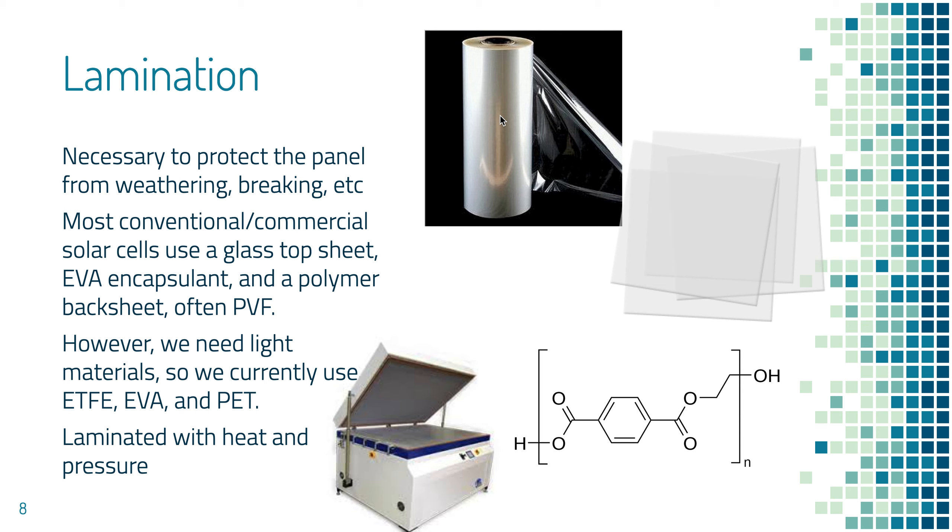ETFE is our top sheet. Our top sheet is very thin and it has a very good refractive index, so not a lot of light is absorbed by it. Then EVA, same encapsulant as other solar panels. It's just like glue. And then our back sheet, slightly thicker than our front sheet, we just use PET, which is like polyester. And then it's just laminated with heat and pressure.